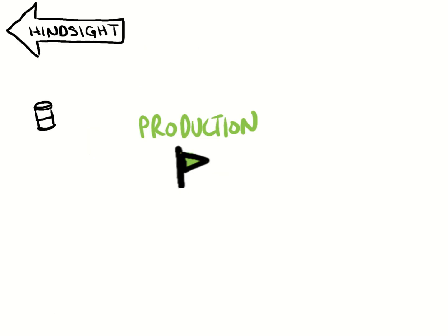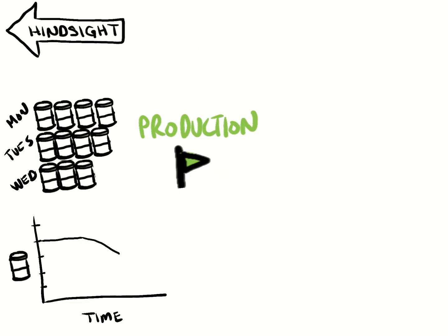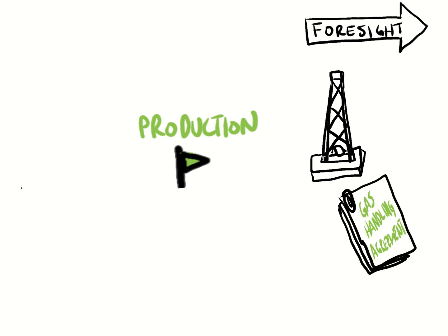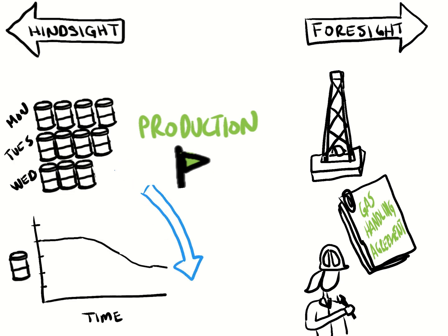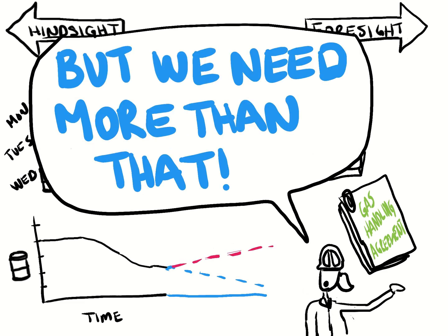Production metrics are often a straightforward count of how much was made per day. Our foresight metrics might include new sources of production like well drilling plans, commercial agreements that route new supplies to us, or maintenance plans that improve availability. The information on current production rates overlaid with the plans for future production can give us a pretty good idea of what the future might hold. But what if that plan doesn't deliver what we need?